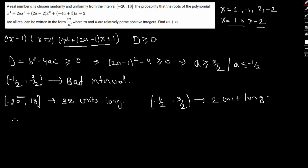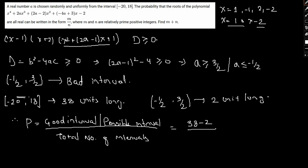So therefore the probability here will be total number of good intervals by total number of intervals, which is simply 38 minus 2 divided by 38, which gives us 36 by 38 that is 18 by 19.